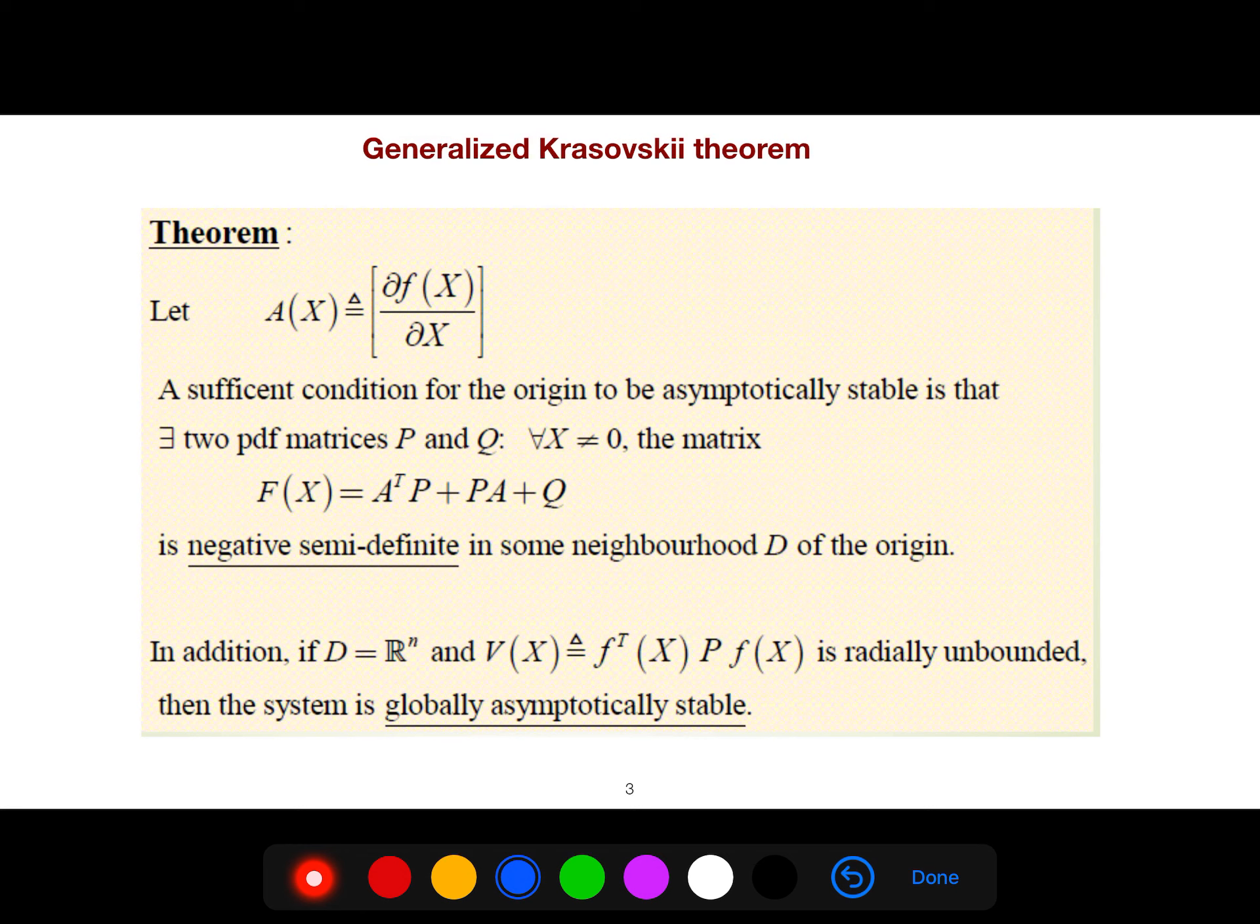Before I start, I will talk about generalized Krasovskii theorem, that first you create your Jacobian, this A matrix, and it's just a sufficient condition for the origin to be asymptotically stable, is that two PDF matrices, P and Q, there exist P and Q, such that this is negative semi-definite.